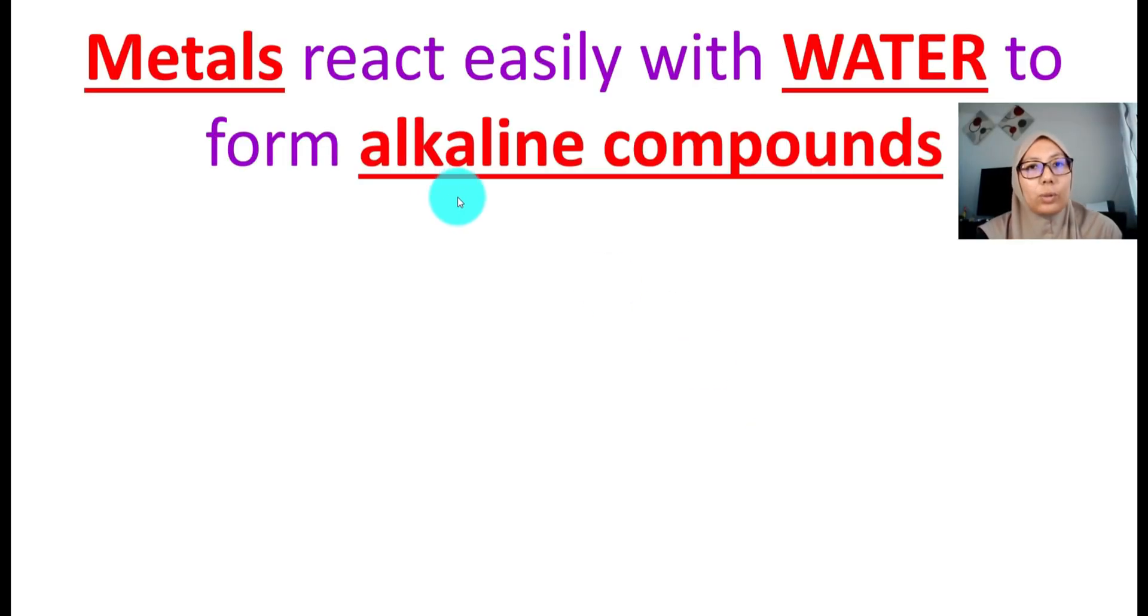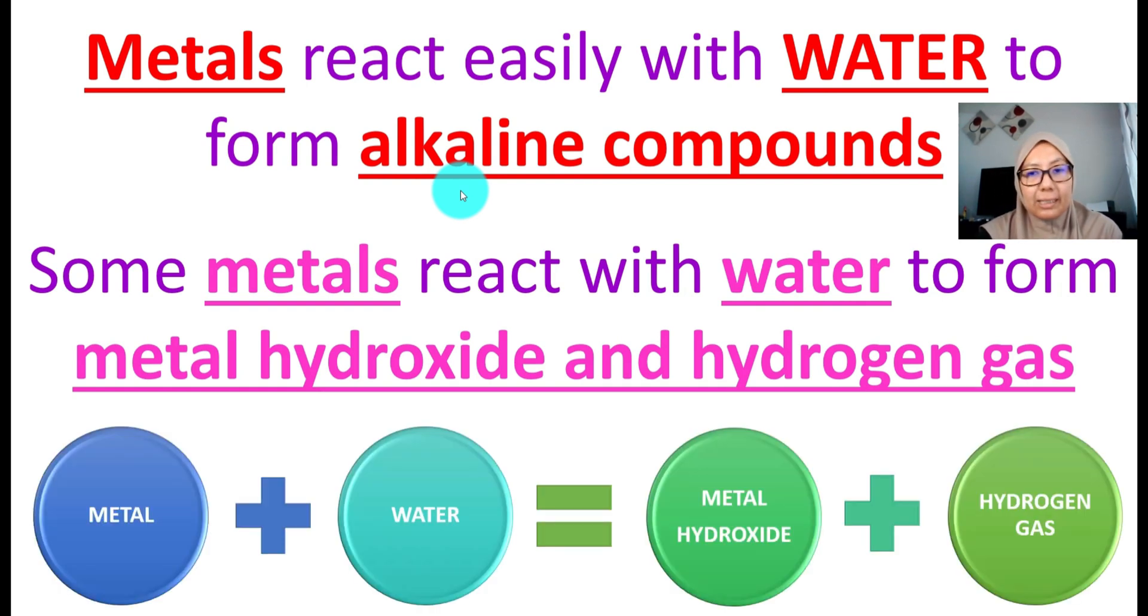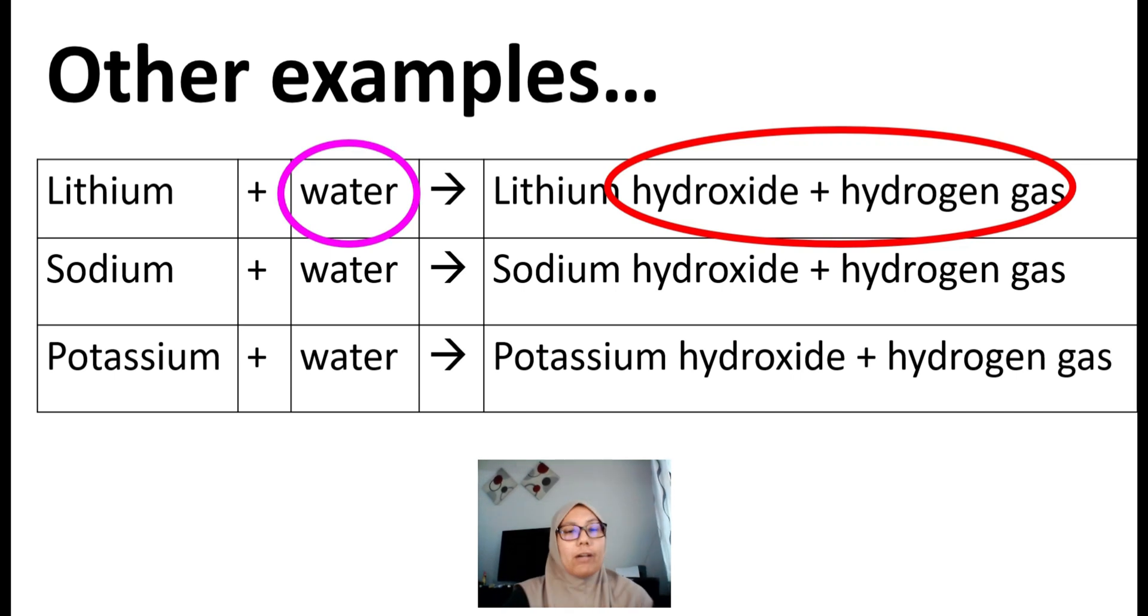Metals also react easily with water to form alkaline compounds. Some metals react to form metal hydroxide and hydrogen gas. The equation looks like this: metal reacts with water to form metal hydroxide and hydrogen gas. Examples include lithium, which produces lithium hydroxide and hydrogen gas, and potassium, which produces potassium hydroxide and hydrogen gas.